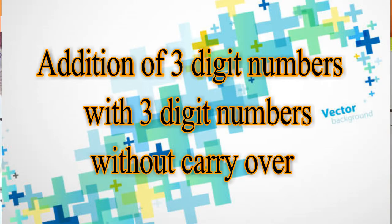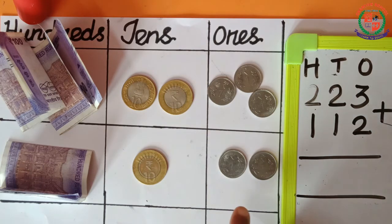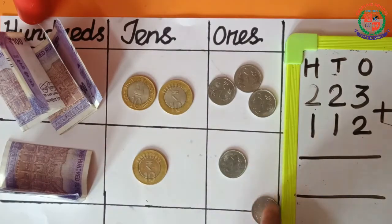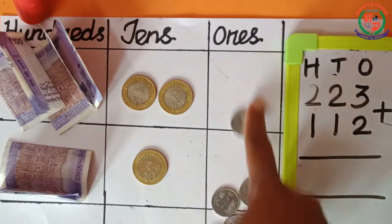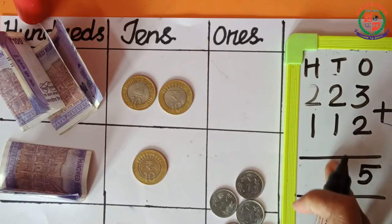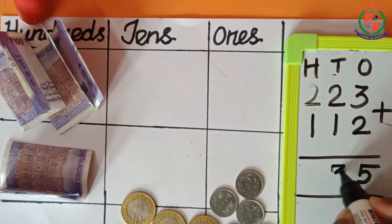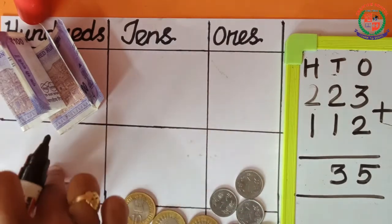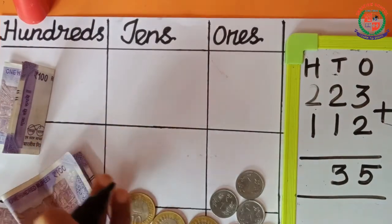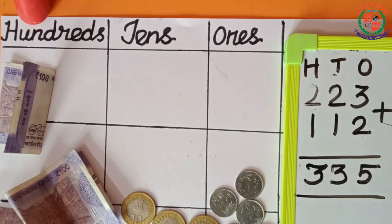Now, we are going to see addition of 3-digit numbers with 3-digit numbers without carry over. Let us add 223 and 112. First, we have to add the 1s place. 1, 2, 3, 4, 5 — so 5 ones are there. So, 3 plus 2 is equal to 5. Next, we add the 10th place: 1, 2, 3 — so we write 3. Next, the 100th place: 1, 2, 3 — so 3 hundreds are there. 2 plus 1 is equal to 3. So, the answer is 223 plus 112 is equal to 335.